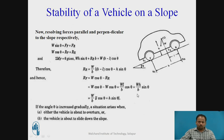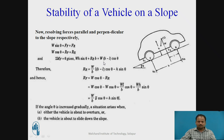It is very important to know the stability of a vehicle on a slope. Here, the vehicle is climbing on a slope. We resolve the weight into parallel and perpendicular directions to the slope. Therefore, W sin theta equals FF plus FR for horizontal equilibrium. Taking vertical forces equal to zero gives W cos theta equals RF plus RR. Taking the moment about the front wheel gives W sin theta times H plus RR times B equals W times (B minus L) times cos theta. Therefore, RR and RF can be determined from these formulas.